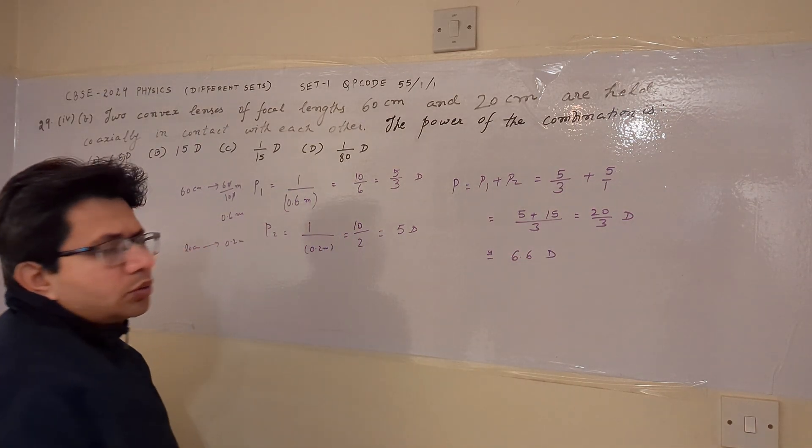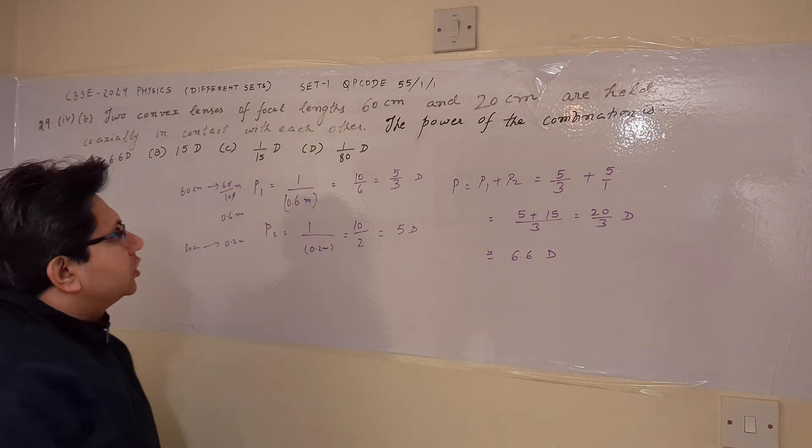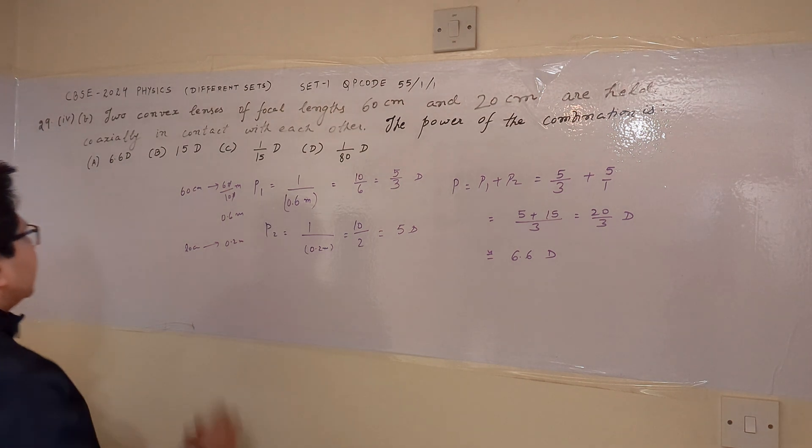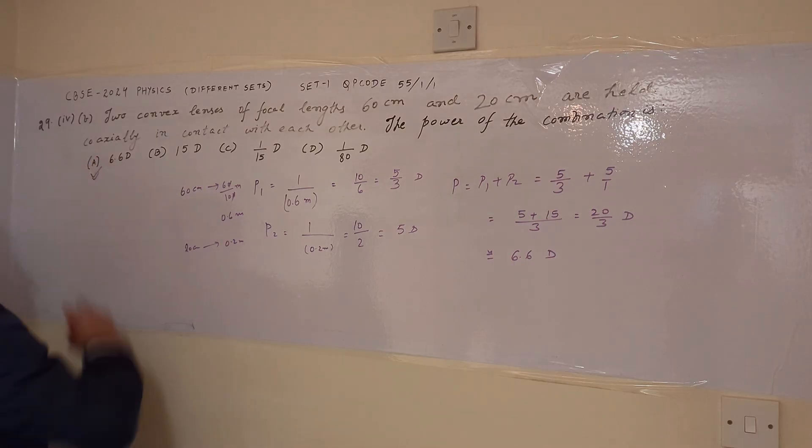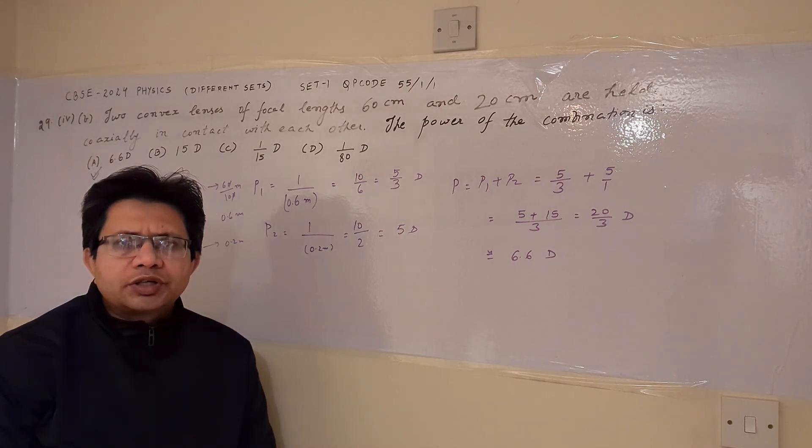So this is the total power of the combination of the two convex lenses. So we can say that option A is right here. 6.6 diopter is the final answer. So hope you understand the solution, thank you.